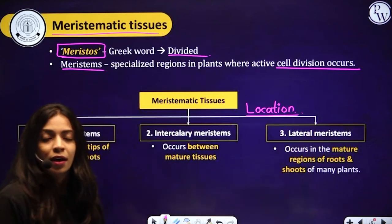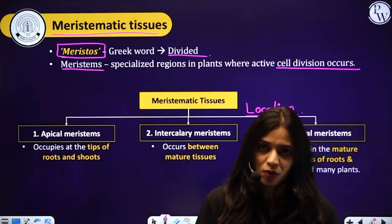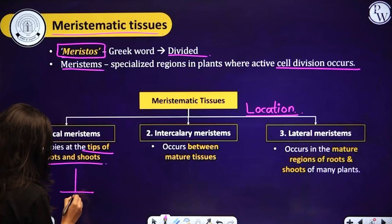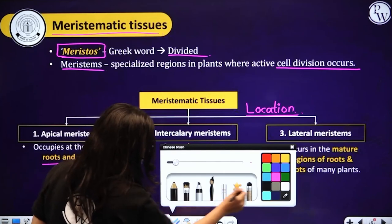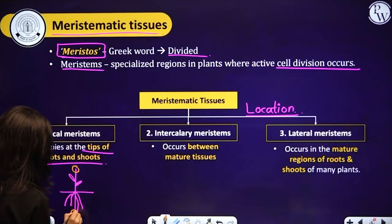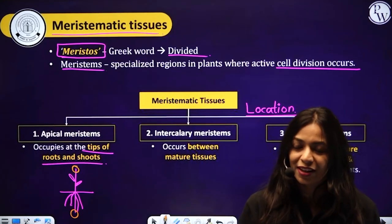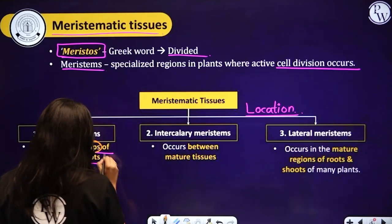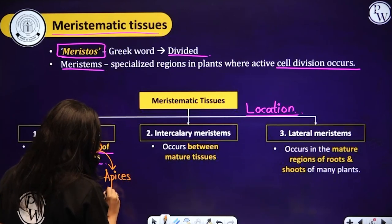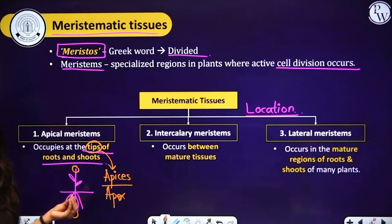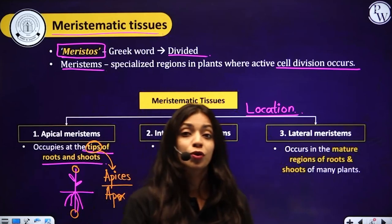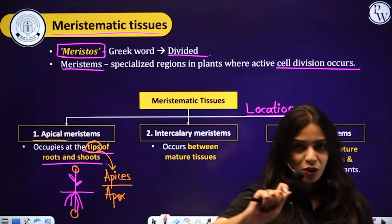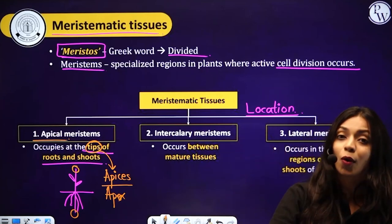Meristematic tissue is located in the tips of roots and shoots — the growing regions. The plant will grow in length because of the meristematic tissue present at their tips. Tips are also called apices (plural) or apex (singular). The meristematic tissue located at the root tip and the shoot tip — the root apex and the shoot apex — are referred to as apical meristems.